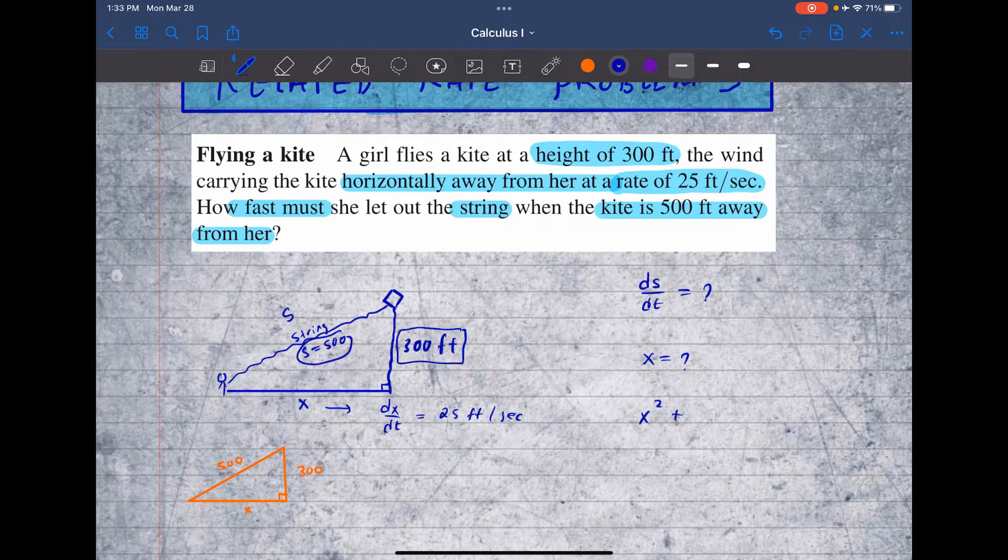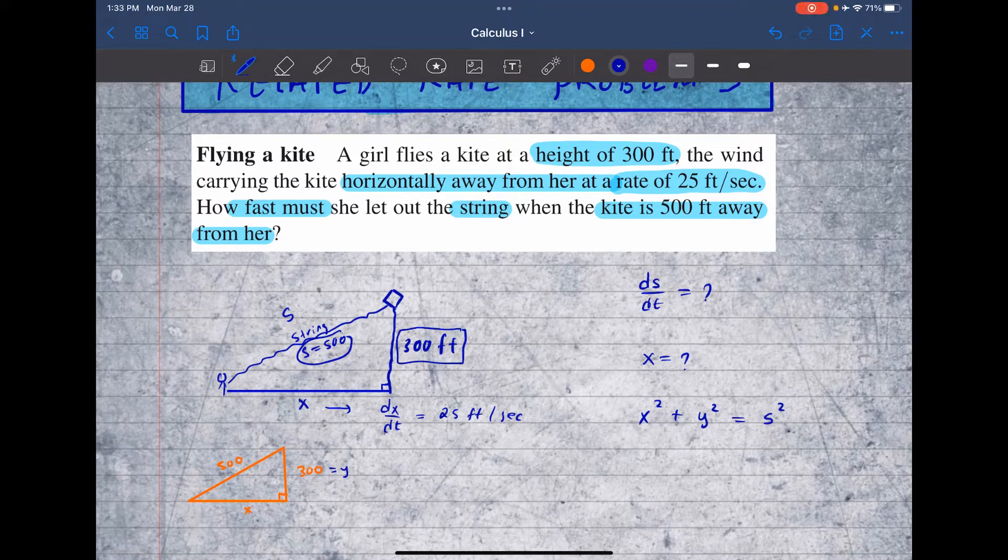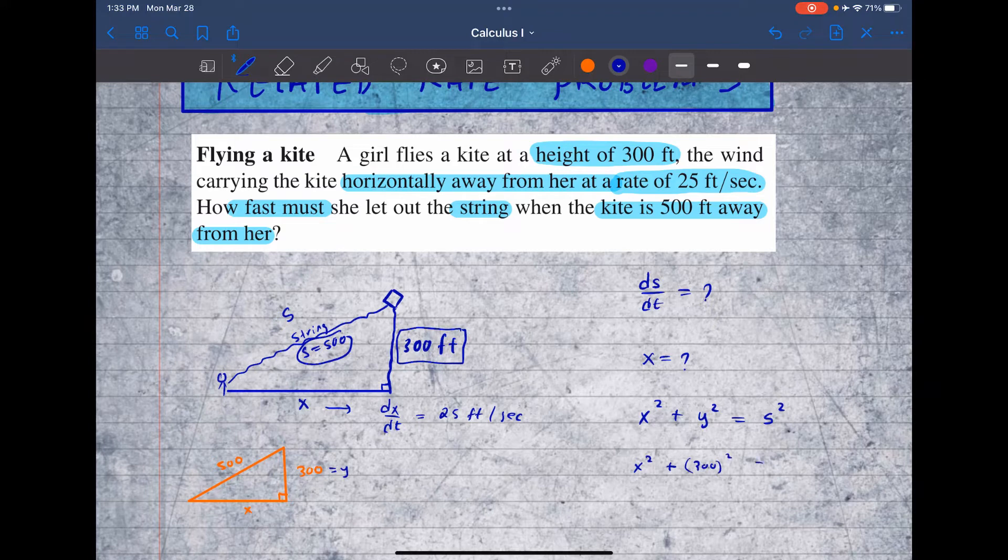We know x squared plus, let's call it y squared, which is this component right here, is equal to s squared, which is the hypotenuse. So x is what we're looking for. So x squared plus y squared, that's 300 squared, is equal to s squared, that's 500 squared. And then solve for x.